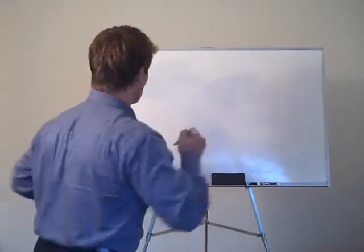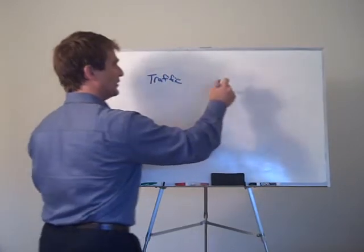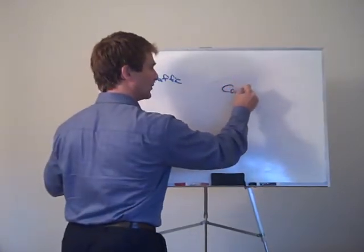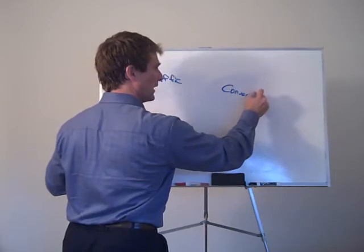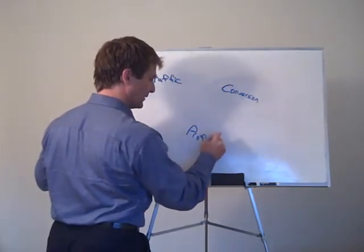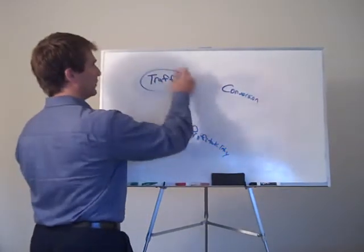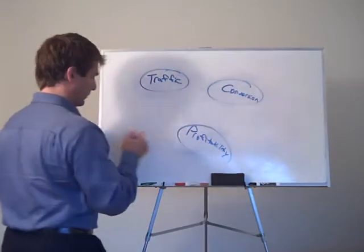Let's get right into the three circles of wealth. Now, the first circle is traffic. The second circle is conversion and the third circle is profitability. All right, hopefully I spelled that right. Traffic, conversion, and profitability.